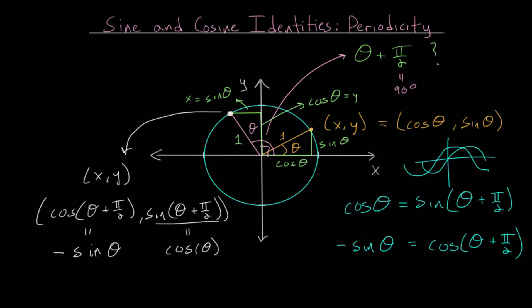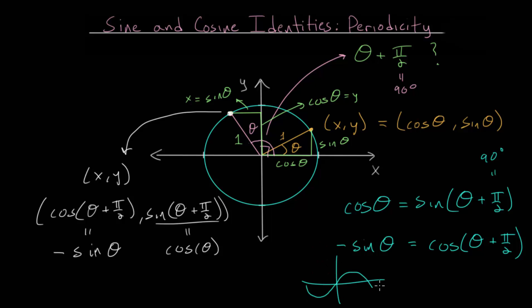In essence, the sine and cosine functions are the same function, just shifted relative to each other by pi over 2 radians or 90 degrees. For the second identity, if we shift the cosine function left by pi over 2 radians or 90 degrees, that equals the opposite of the sine function — essentially the sine function reflected across the x-axis. This reflected sine function is the cosine function shifted left by pi over 2 radians.